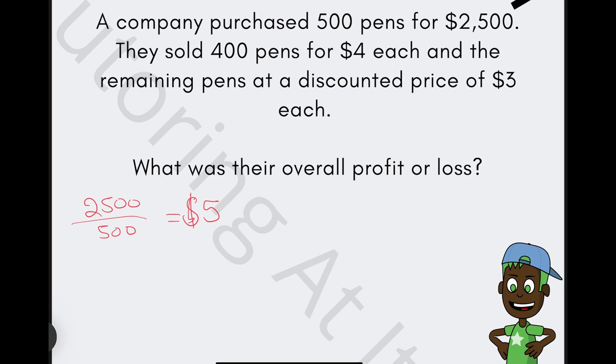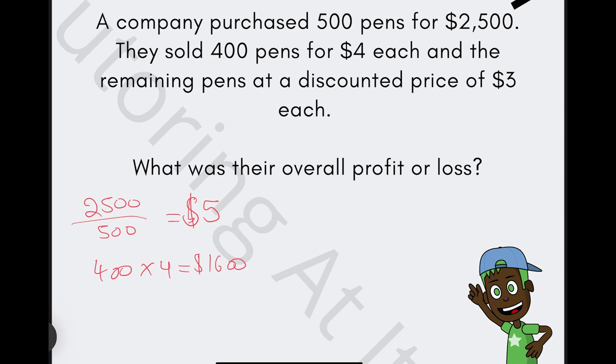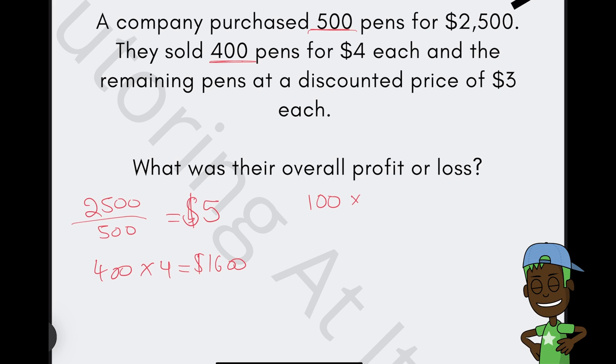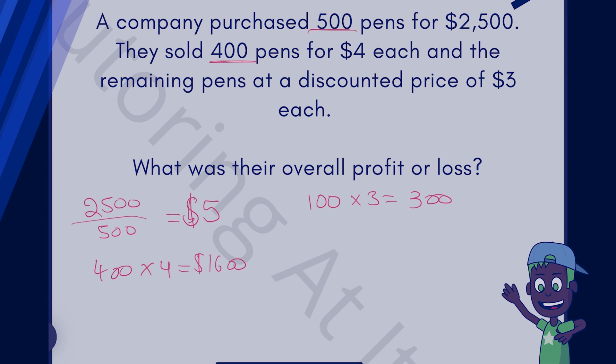We're going to do $2,500 divided by 500 pens, and that gives us $5. And so the revenue from selling 400 pens at $4 each is going to be 400 times by 4, which gives us $1,600. And now the revenue from selling the remaining pens at a discounted price of $3 each. We know we had 500 pens and 400 are sold, so that's 100 remaining. We can times that by 3, so we get $300. So that's $300 and $1,600. If we add that together, that gives us $1,900.